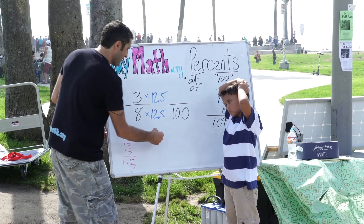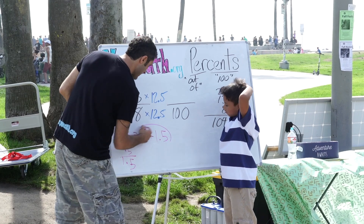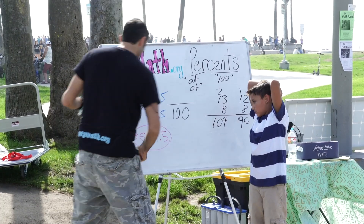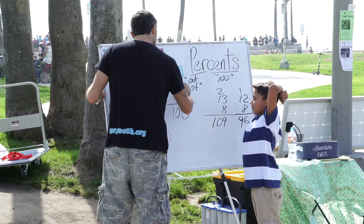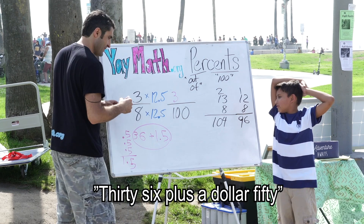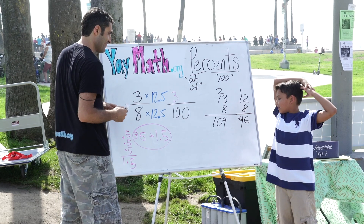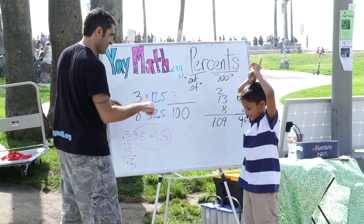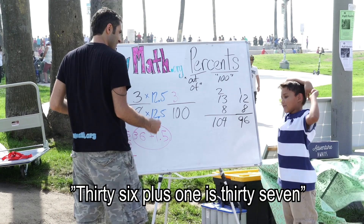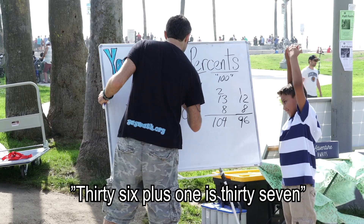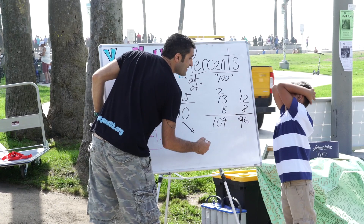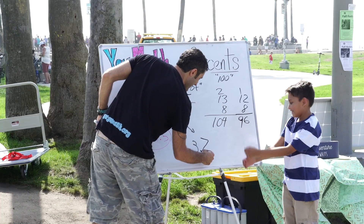Good job, dude — 1.5! So 36 plus 1.5 — add them up. What's 36 plus $1.50? $39.50? Try again. 36 plus 1 is 37 — 37.5! 37.5. Last question: 37.5 over 100 is what percent? 37.5%! Nice, well done.